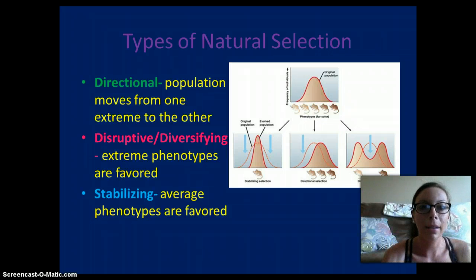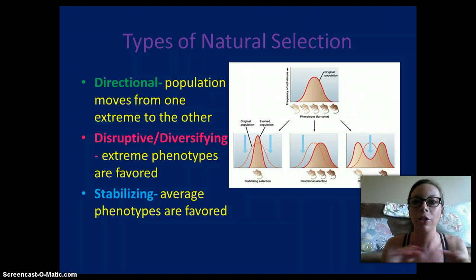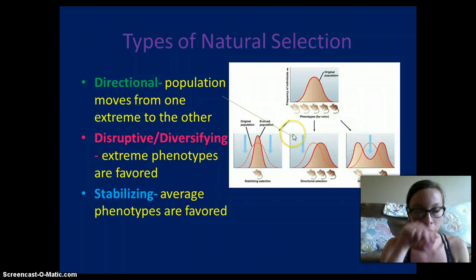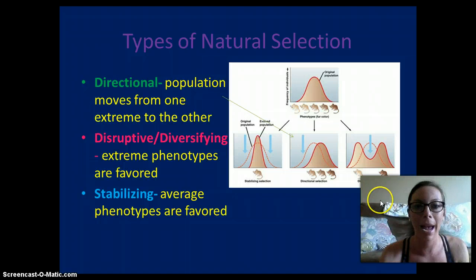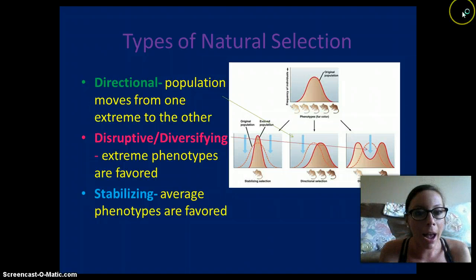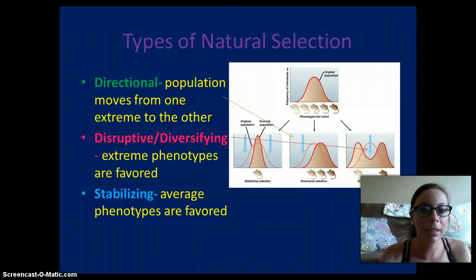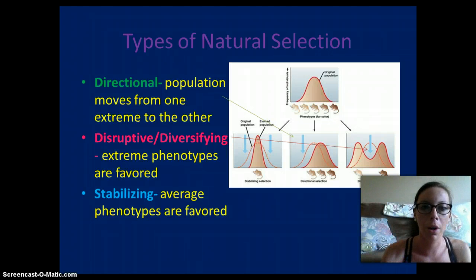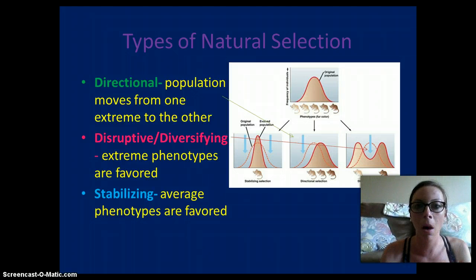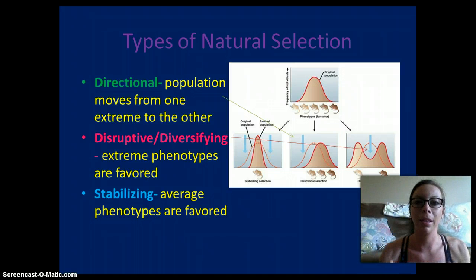Disruptive or diversifying selection states that the extreme phenotypes — the ones on the ends — are going to survive and reproduce, while the middle phenotypes will die off. Stabilizing selection means that the average phenotypes, or the phenotypes in the middle, are favored. So if we had large, medium, and small, the large and small would die off and the medium would survive.